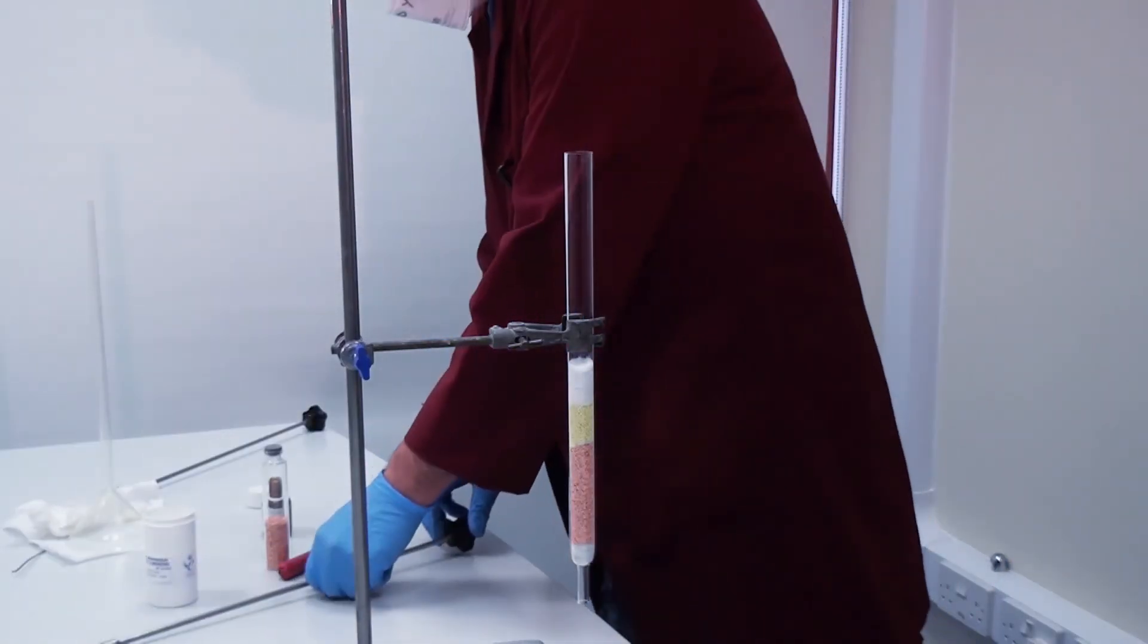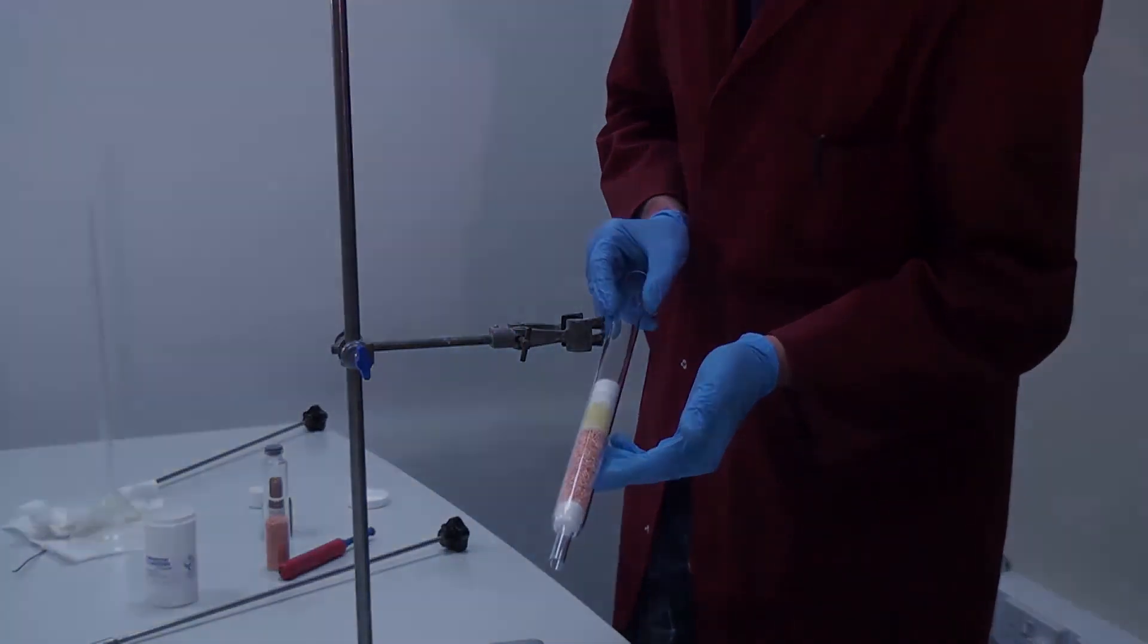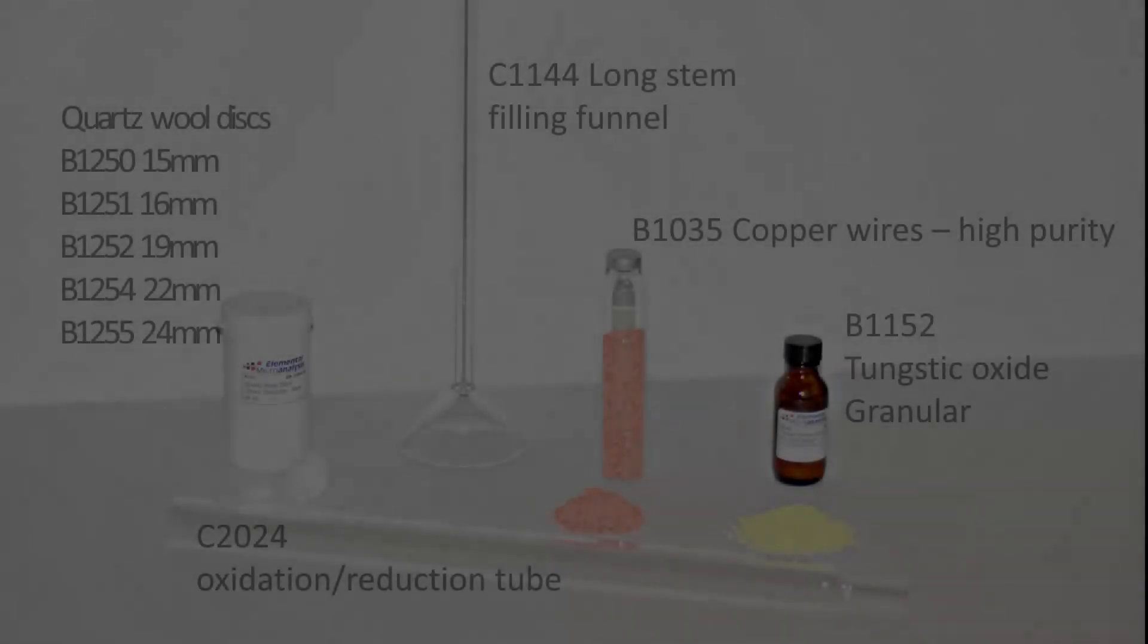And there you have it. Before installing in the furnace, wipe the outside of the quartz tube with a solvent wipe to remove the marker pen lines and any dirt or fingerprints.